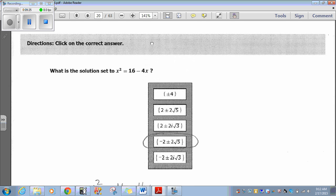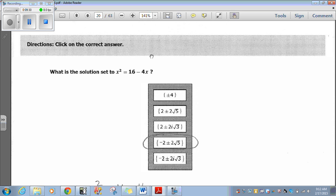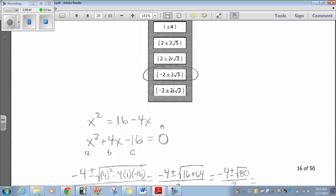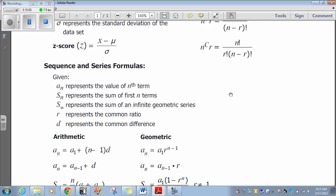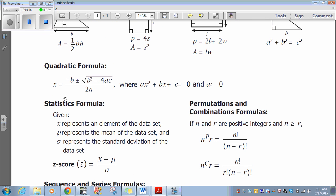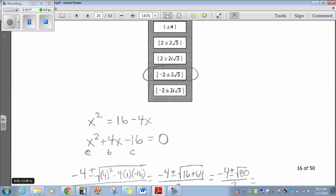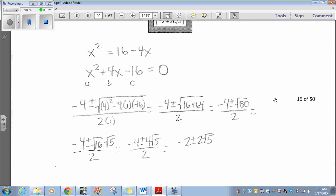Let's move on to number 16. Directions: Click on the correct answer. What is the solution set to x squared equals 16 minus 4x? What this looks like is I need to set this equation equal to 0, then use quadratic formula. So, if I subtract 16 and add 4x on both sides, I would get x squared plus 4x minus 16 equals 0. So, this is set up to use the quadratic formula. And the quadratic formula, which is on your formula sheet right here, x equals negative b plus or minus the square root of b squared minus 4ac divided by 2a.